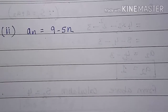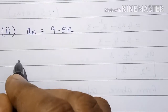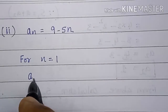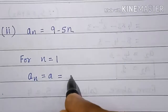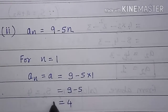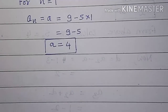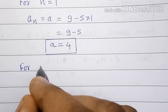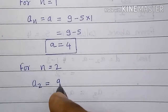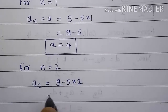Now we will take the second part: an is equal to 9 minus 5n. For n equal to 1, a1 is equal to 9 minus 5 into 1, that is 9 minus 5, equal to 4. For n equal to 2, a2 is equal to 9 minus 5 into 2, that is 9 minus 10, equal to minus 1.